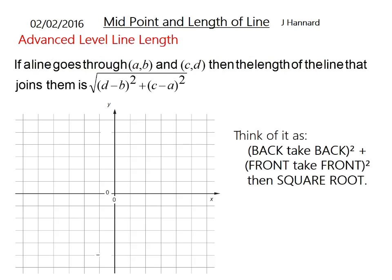We are also doing advanced level line length today. That is also on the OCR course. If a line goes through A, B, C, D, then the length of the line that joins them is the square root of back take back squared added to front take front squared. That is what you need to think of it. Back take back squared added to front take front squared, and then square root it.